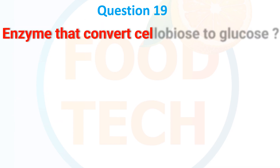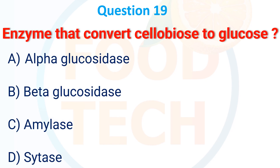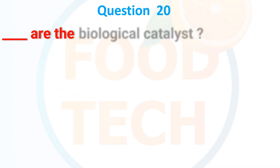Enzyme that converts cellulose to glucose: A. Alpha-glucosidase, B. Beta-glucosidase, C. Amylases, D. Cellulase. The answer is B. Beta-glucosidase.